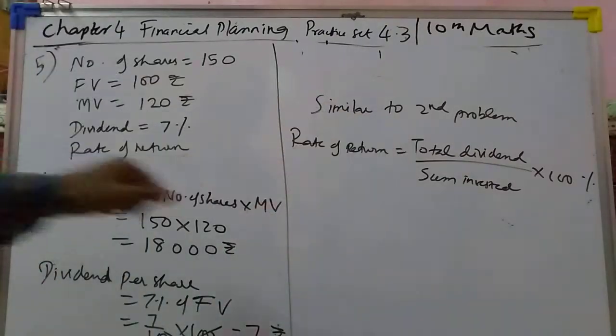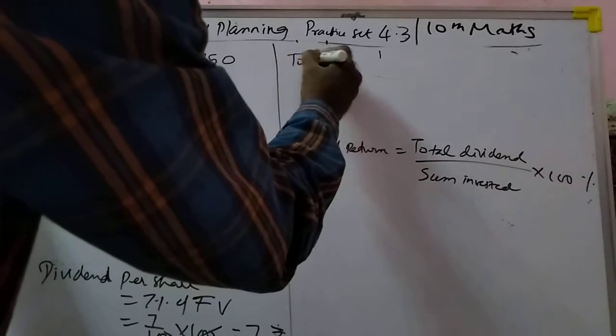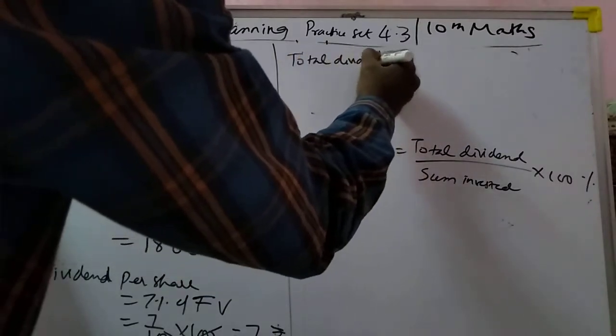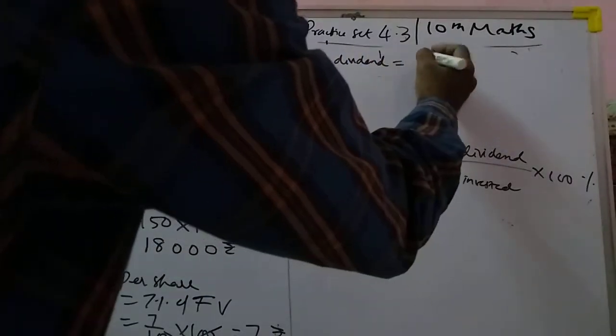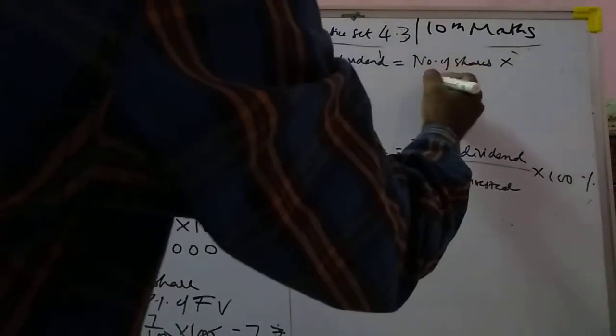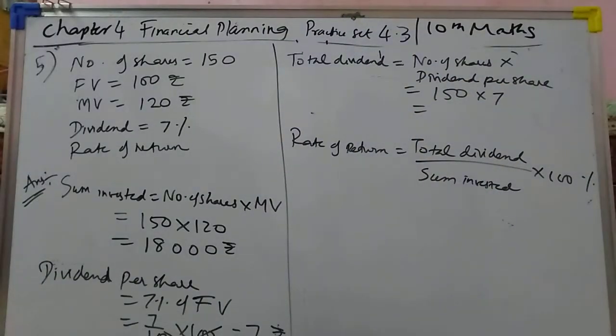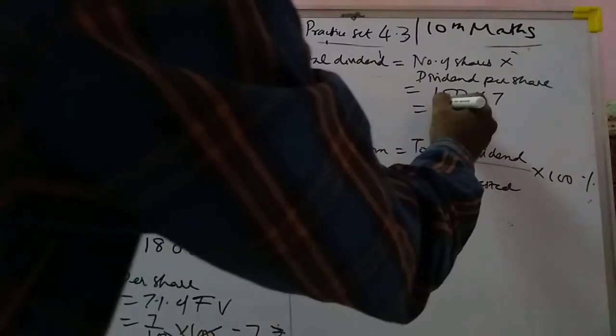Now find total dividend. Total dividend equals number of shares into dividend per share, that is 150 into 7, which gives 1050 rupees.